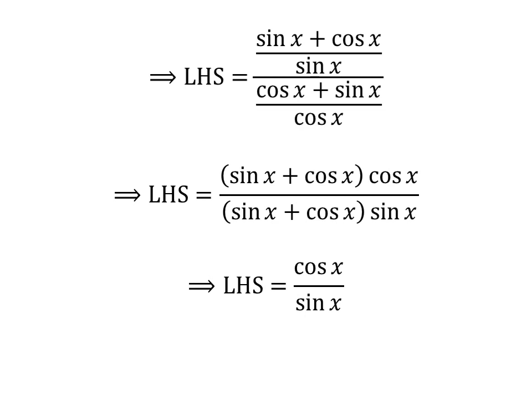Cancellation of common factors in the numerator and denominator gives us left-hand side of the identity is equal to cosine of x upon sine of x.